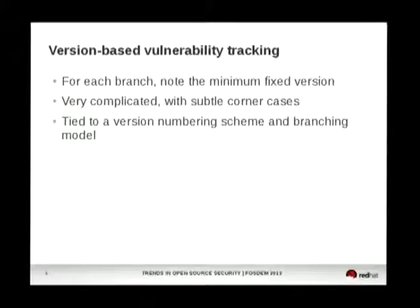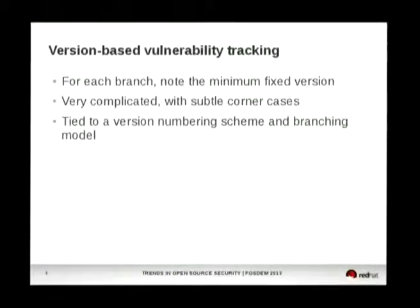It turns out it's really, really complicated in some corner cases to make this work. Debian does this for the unstable and stable distributions and we've learned over the years that it is really complicated to cover all eventualities, but it works well to some extent. Version-based vulnerability tracking is tied to the version numbering scheme and branch model, so you cannot use Debian version numbers on Ubuntu, OpenSUSE, or Fedora.